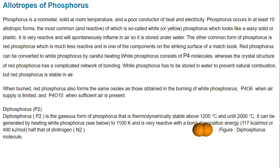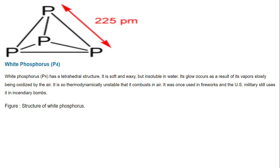Diphosphorus P2 is the gaseous form of phosphorus that is thermodynamically stable above 1200 degrees centigrade and up to 2000 degrees centigrade. It can be generated by heating white phosphorus to 1100 Kelvin and is very reactive, with a bond dissociation energy of 117 kilocalories per mole — half that of nitrogen. Here, the figure depicts diphosphorus. White phosphorus P4 has a tetrahedral structure as seen in this figure. It is soft and waxy but insoluble in water. It glows as a result of its vapor slowly being oxidized by air. It is thermodynamically unstable and combusts in air. It was once used in fireworks and the US military still uses it in incendiary bombs.